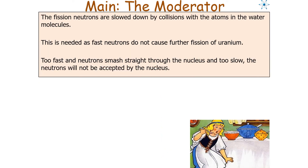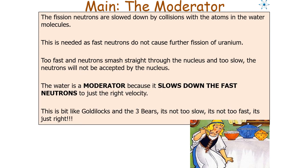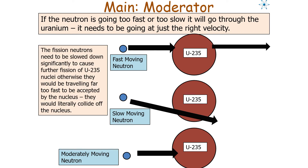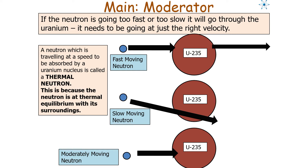The final component to consider is the moderator. Fission neutrons are slowed down by collisions with atoms of the water molecules. This is needed because fast neutrons do not cause further fission of uranium — if travelling too fast, neutrons smash straight through the nucleus, and if too slow, they will not be accepted by the nucleus. Water is a moderator because it slows down fast neutrons to just the right velocity. A neutron travelling at just the right speed to be absorbed by a uranium nucleus is called a thermal neutron.